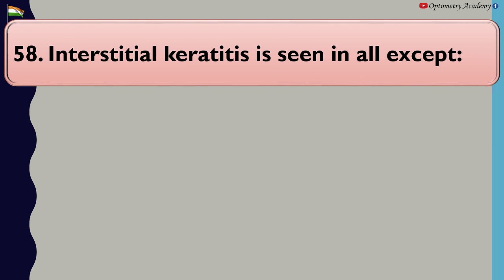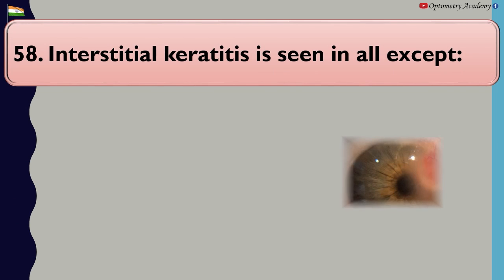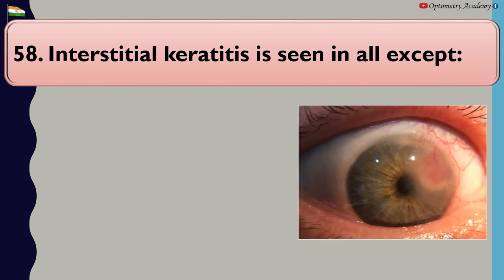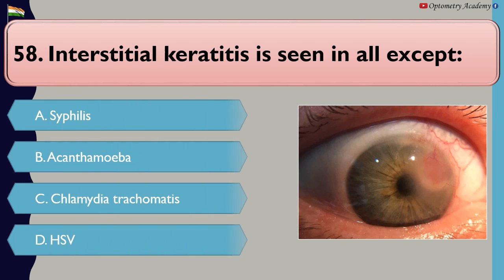Interstitial keratitis is seen in all except: A. Syphilis, B. Acanthamoeba, C. Chlamydia trachomatis, D. HSV.